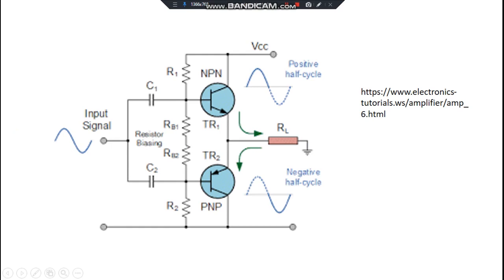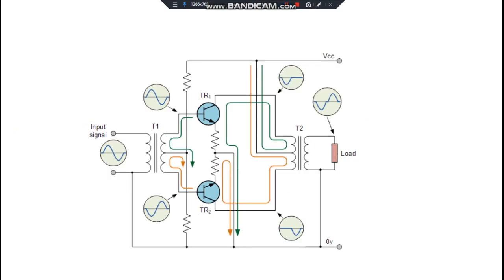The transformer couples input to the bases. One is given in phase to the input signal, whereas the other signal for the bottom transistor, the PNP transistor, is out of phase. This is the NPN transistor, this is the PNP transistor.